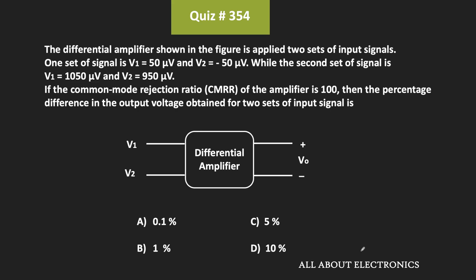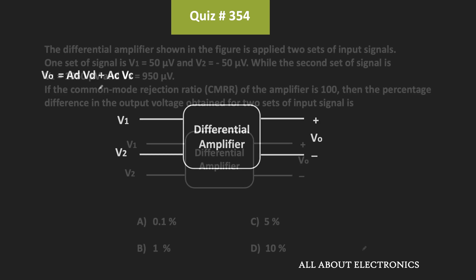Welcome to the YouTube channel all about electronics. In this question, we've been given one differential amplifier and the common mode rejection ratio or CMRR of this amplifier is equal to 100. Two different sets of input signals are applied to this differential amplifier, and we've been asked to find the percentage difference in the output voltage obtained for the two sets of input signals.